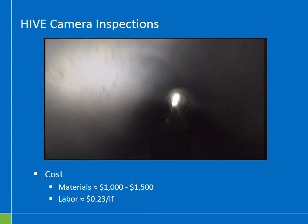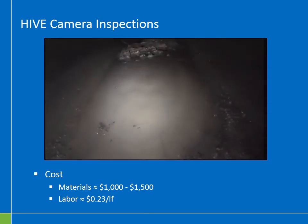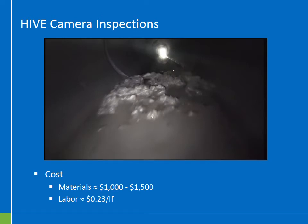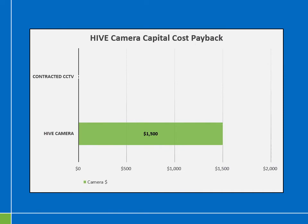The cost of a HIVE inspection requires building the camera. The cost of materials to build the camera runs between about $1,000 to $1,500 per camera. Inspections can then be conducted with one person. Assuming MnDOT's labor rates and disregarding travel cost, the cost of conducting a HIVE inspection runs about 23 cents per foot — even more cost-effective than a traditional CCTV camera. When you compare the cost of building a HIVE camera unit to the cost of retaining a contractor for CCTV inspection, you can see a capital cost payback for constructing a new HIVE camera.